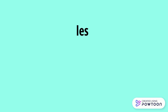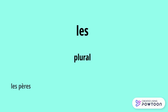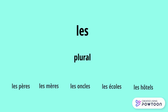Les is used with all plural nouns. For example: les pères, les mères, les oncles, les écoles, les hôtels. Note that in front of a vowel or silent h, les is pronounced with a liaison.